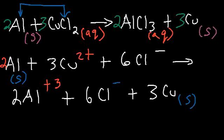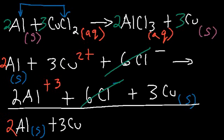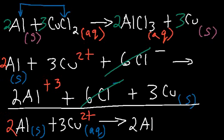Our next step is to eliminate the spectator ions — the ions found exactly the same on both sides of the reaction. The only spectator ions here are the chloride ions. What remains is the net ionic equation: two aluminum atoms in the solid phase plus three copper ions in the aqueous phase, producing two aluminum ions in the aqueous phase and three copper atoms.